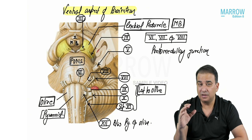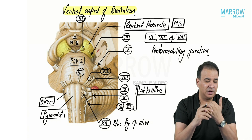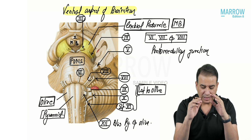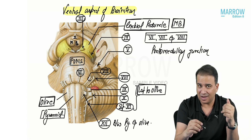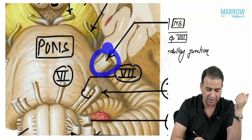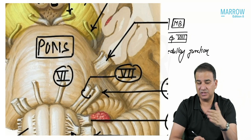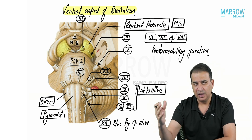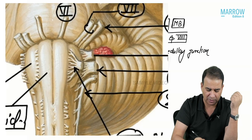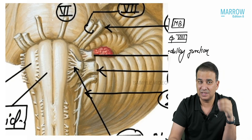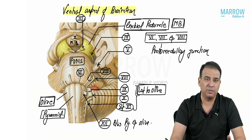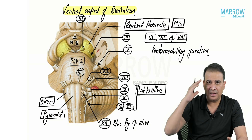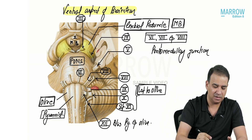Summary of the ventral aspect: third nerve is from the interpeduncular fossa; fourth is the only nerve coming from the dorsal aspect; fifth is the only cranial nerve emerging from the ventral surface of the pons; sixth, seventh, and eighth come from the pontomedullary junction; ninth, tenth, and eleventh are lateral to the olive; and between the pyramid and olive, multiple rootlets of the hypoglossal nerve come out.